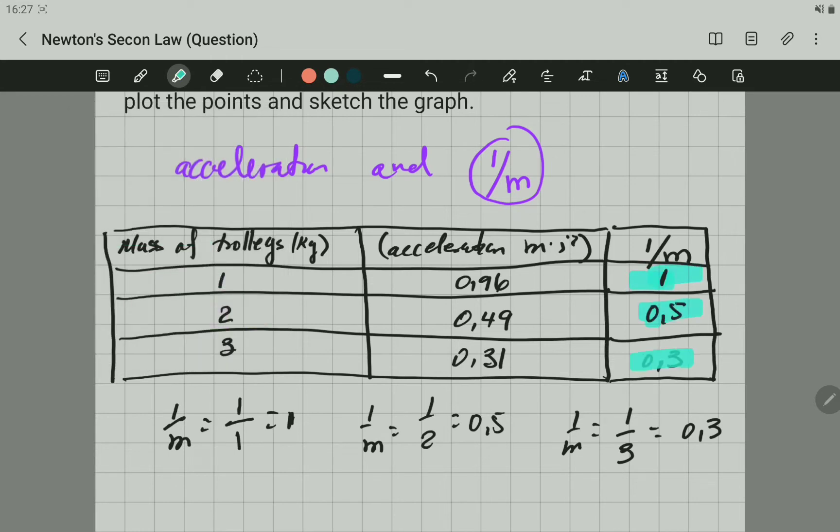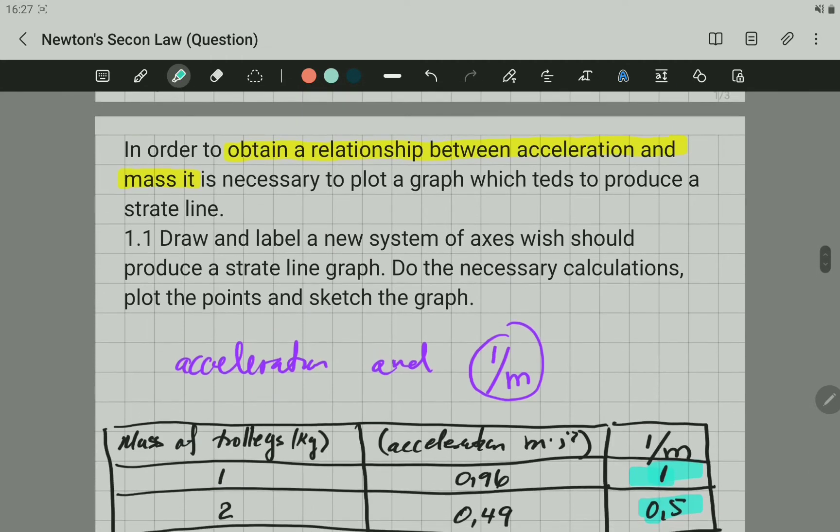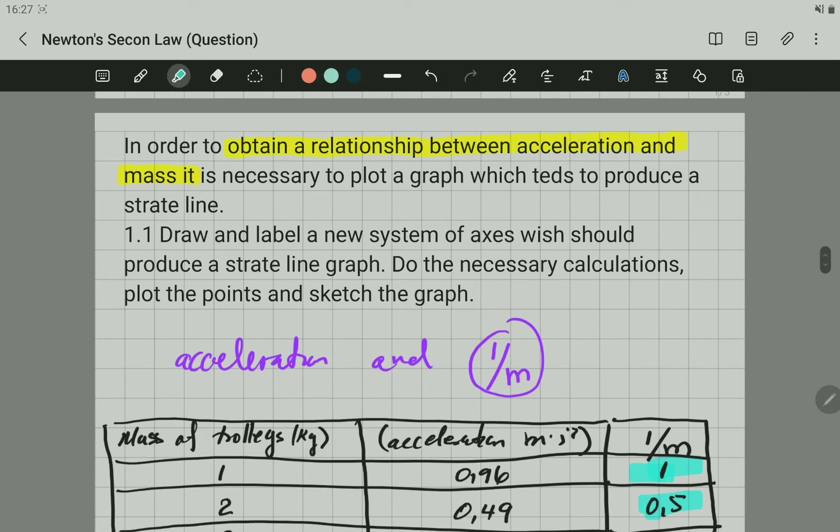The question said, draw and label a new system of axes which should produce a straight line graph. That new system of axes is going to be acceleration versus the inverse of mass. This is the new graph we have to draw and plot.